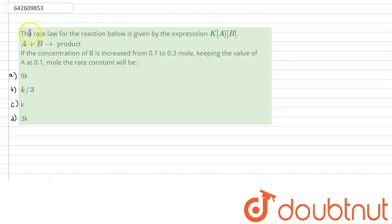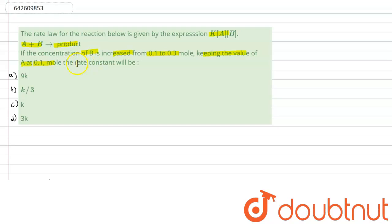The question says the rate law for the reaction below is given by the expression K into concentration of A and concentration of B. The reaction is A plus B giving the product B. If the concentration of B is increased from 0.1 to 0.3, keeping the value of A at 0.1 mol, we have to find the value of the rate constant.